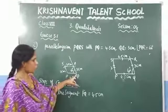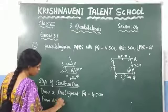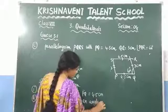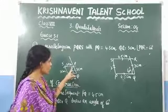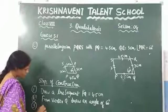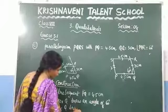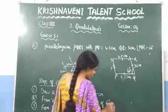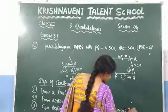The second step: at vertex Q, draw an angle of 60 degrees. The third step: from vertex Q, draw an arc of 3 centimeters radius and mark it as R.